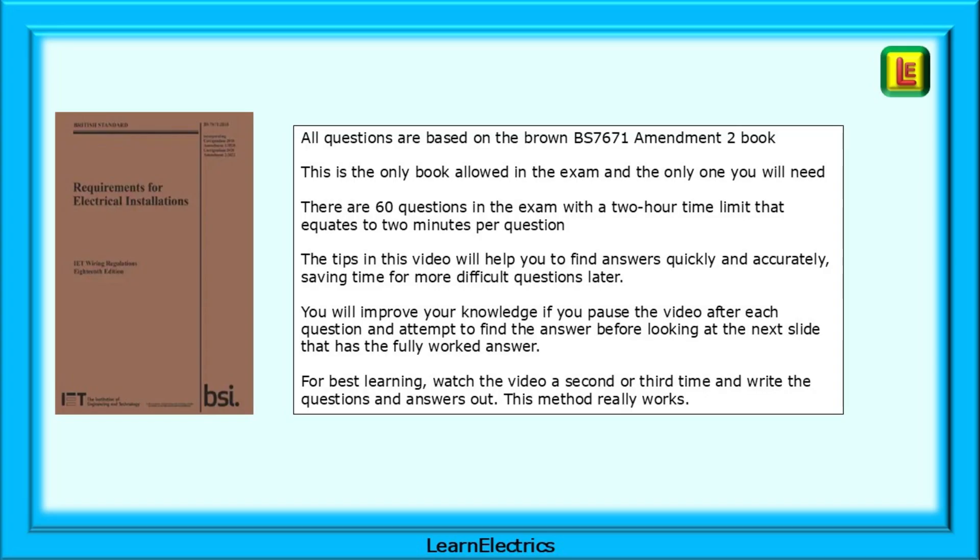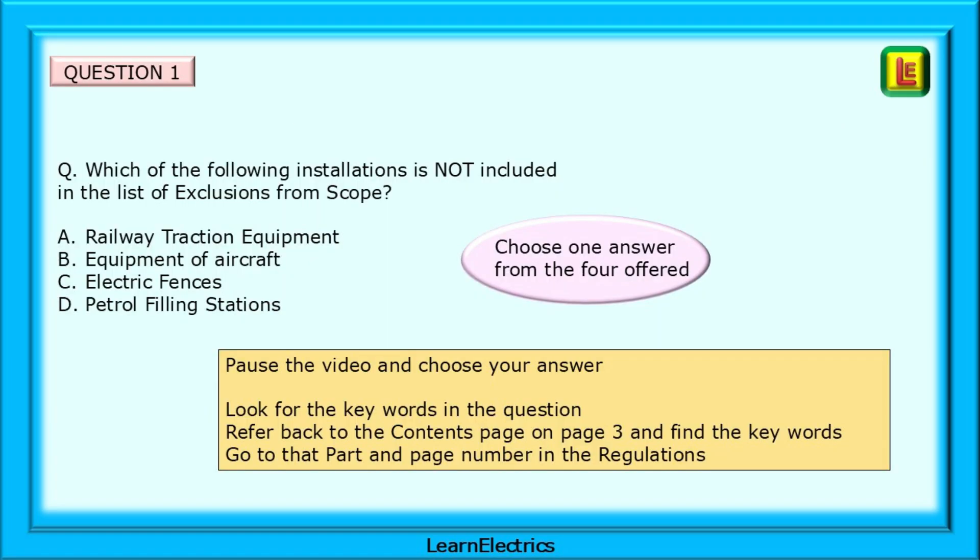This time, the questions are not in book order. Question 1 asks us, which of the following installations is not included in the list of exclusions from scope? Four possible answers are offered, but only one is correct for this question. Pause the video and choose your answer. Look for the key words in the question. Refer back to the contents page on page 3 and find the key words. Then go to that part and page number in the regulations and find the answer.